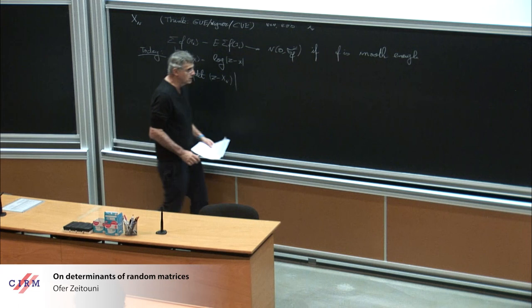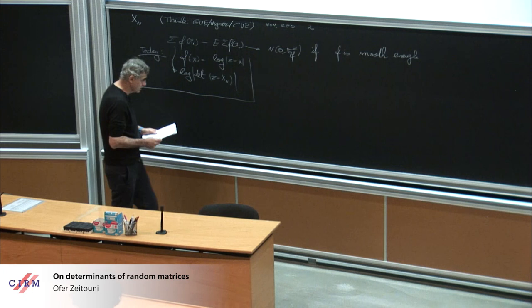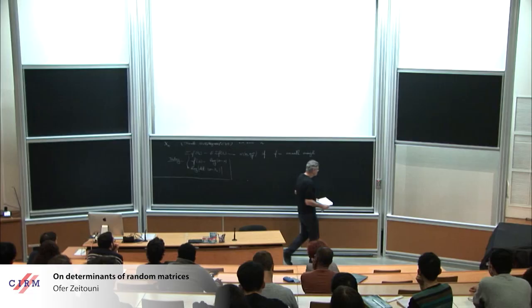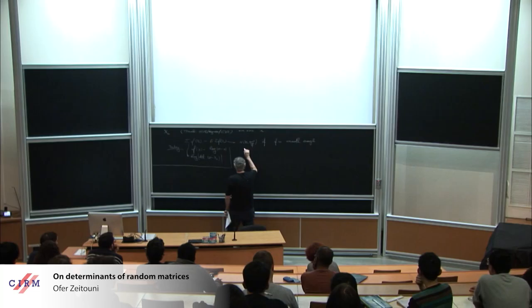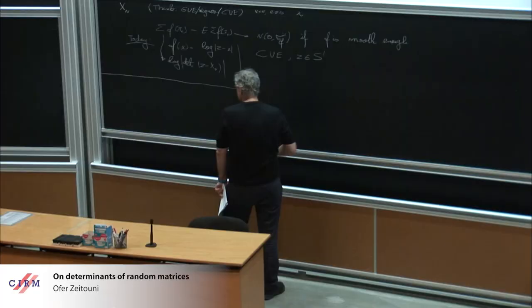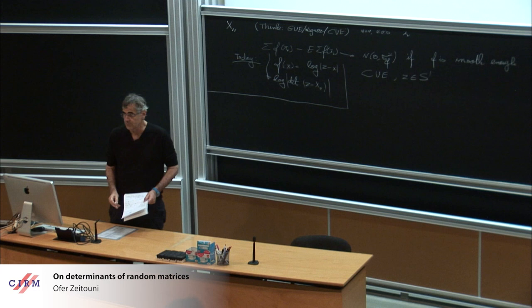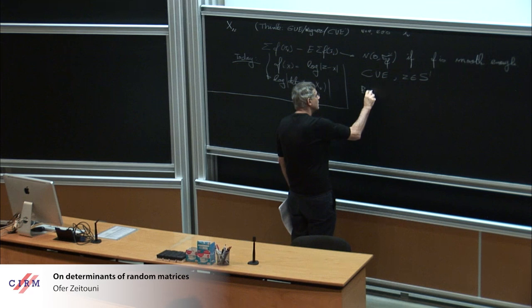We will want to take care and parametrize by z, because eventually there will be interest to look at it as a process in z, not just as a one-dimensional object. So why or where does this question come from?